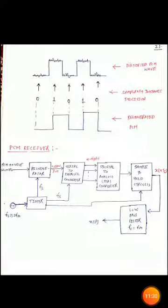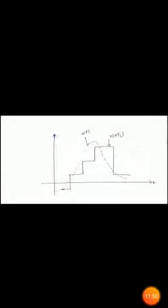A sampling frequency generated by an oscillator is applied to the regenerator/repeater, the serial-to-parallel converter, and the sample-and-hold circuit via a timer. The output of the low pass filter is a continuous time signal, the recovered message signal x(t). The sampled signal passes through the low pass filter, and the dotted line indicates the output of this low pass filter — the continuous time signal x(t).